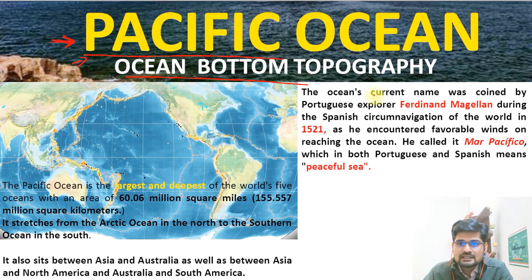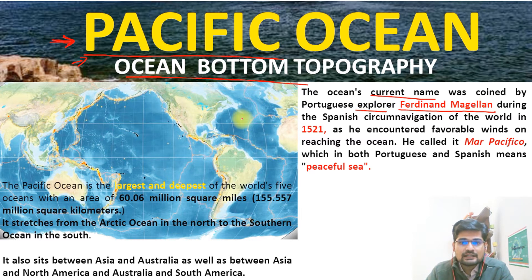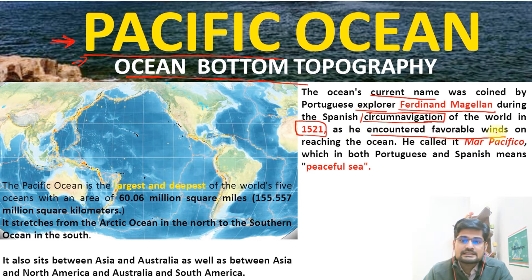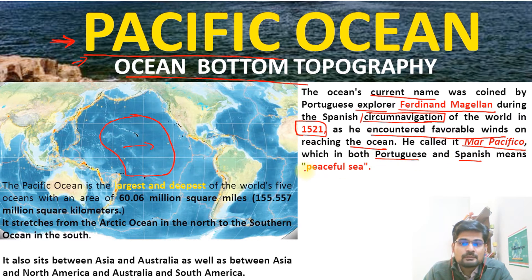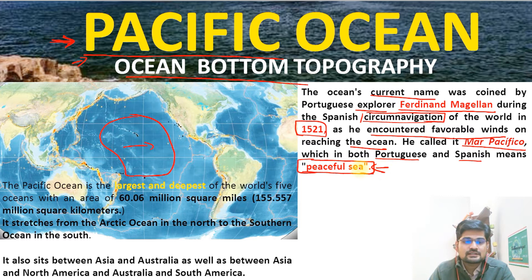The ocean's current name, Pacific Ocean, was coined by the Portuguese explorer Ferdinand Magellan. During the Spanish circumnavigation of the world in 1521, he encountered favorable winds on reaching this particular ocean. This ocean was where the wind was blowing in a very calm manner, so he called it Mar Pacifico, which means peaceful sea in both Portuguese and Spanish. Pacific basically is the word for peaceful.